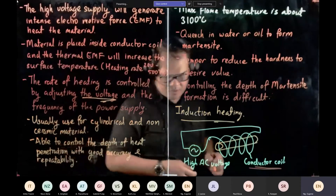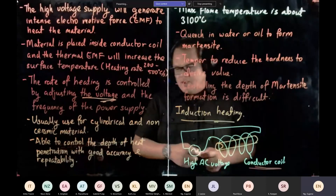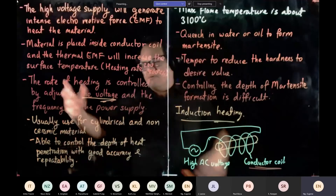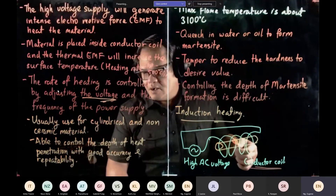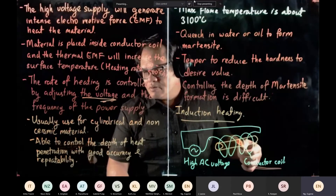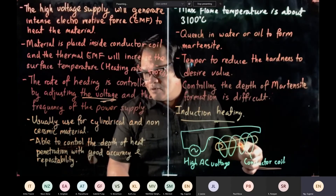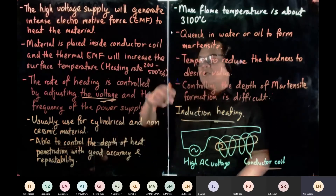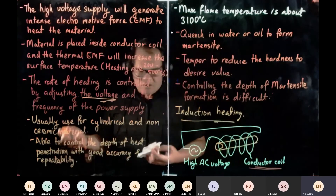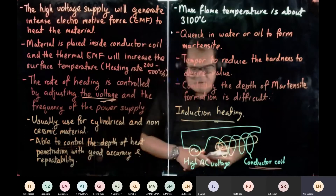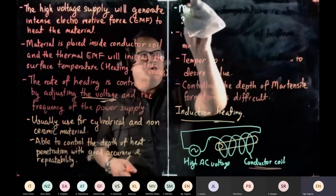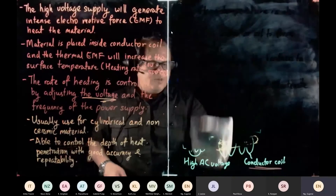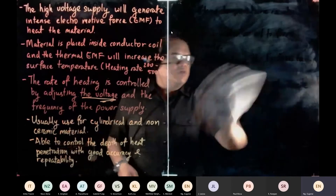There are other types of heating such as ion beam heating and laser heating, but flame hardening and induction heating are the most commonly used. These techniques are all for surface hardening. The next technique is also a surface hardening method: altering the surface chemistry. We'll look at the advantages of doing this next.